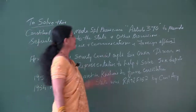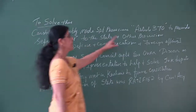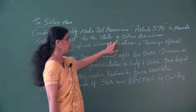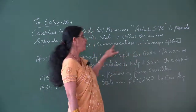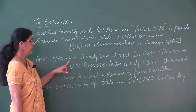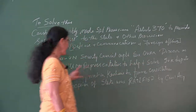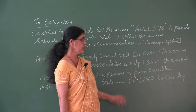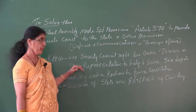To address this, the Constituent Assembly made certain provisions and Article 370 was created. Article 370 provided for a separate constitution for the state and gave other provisions covering defense, communication, and foreign affairs from the Indian Union. Later, in 1950, the United Nations Security Council appointed Sir Owen Dixon as the UN representative to help solve the Jammu and Kashmir dispute — to resolve whatever differences J&K had with the Indian Union. But even then, the UN Security Council could not solve the problem.